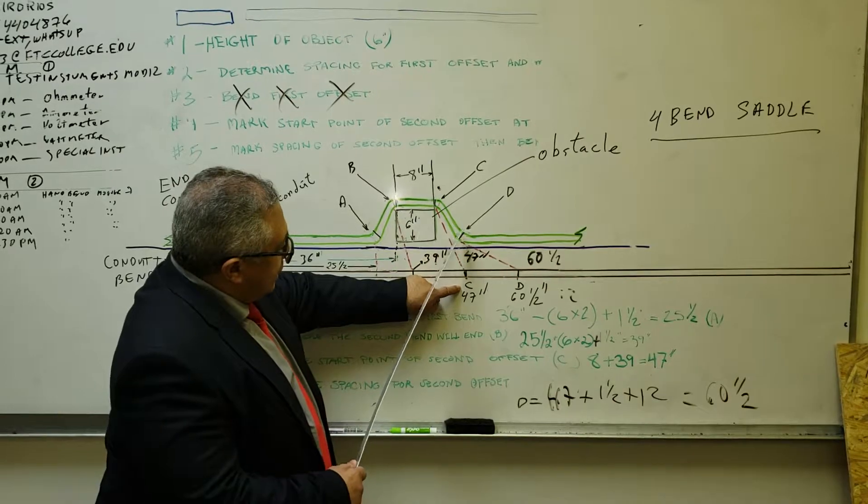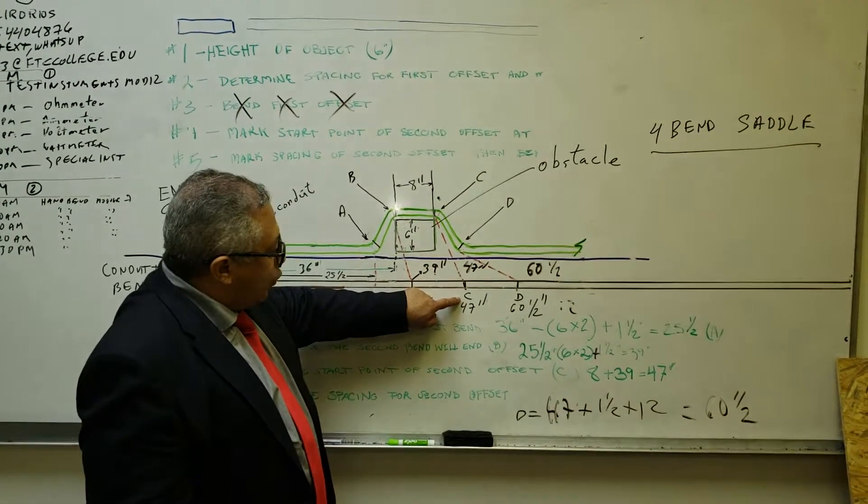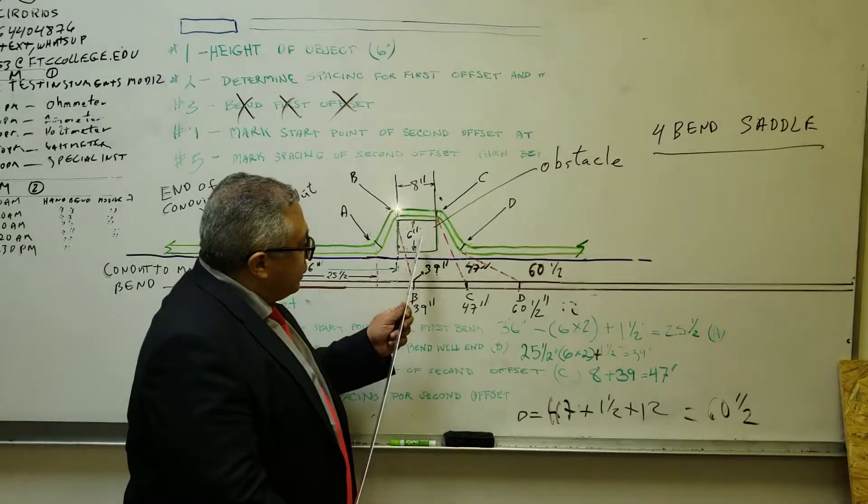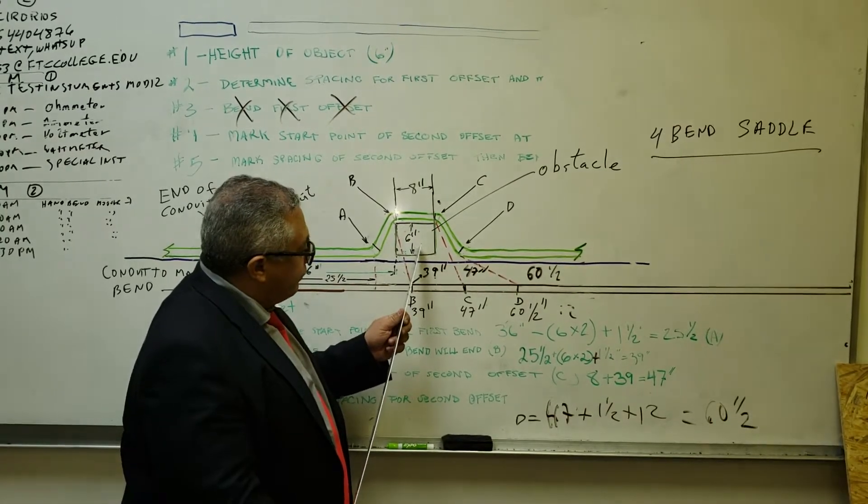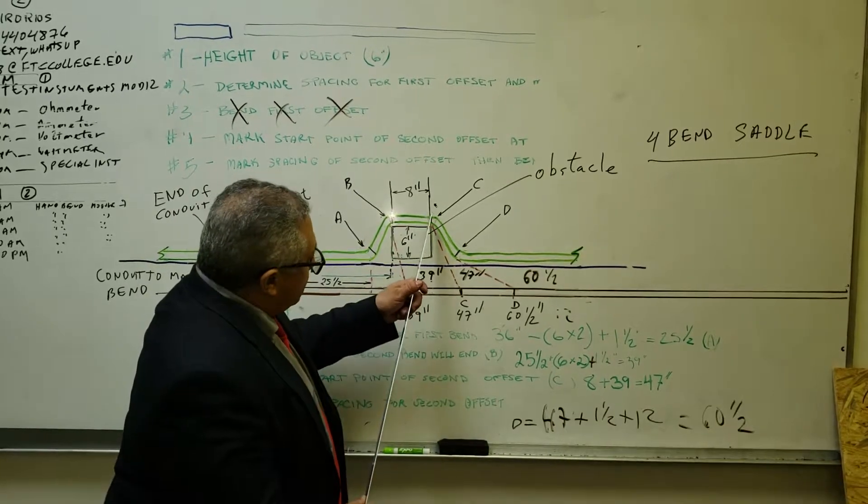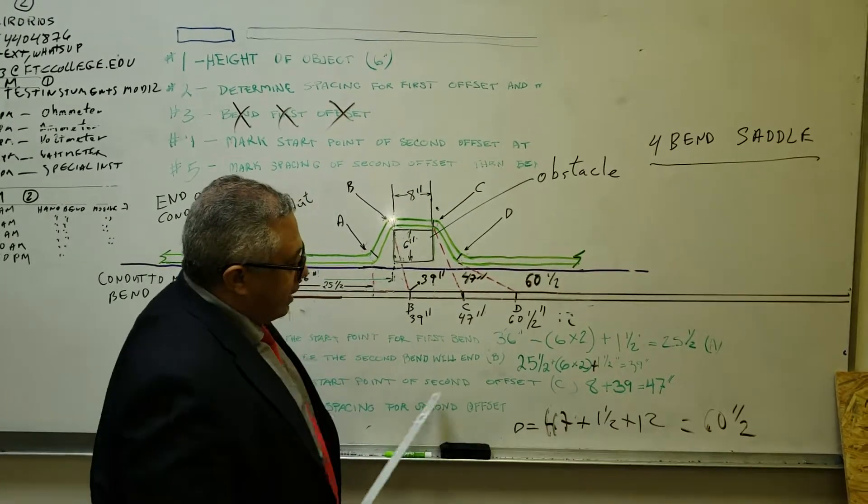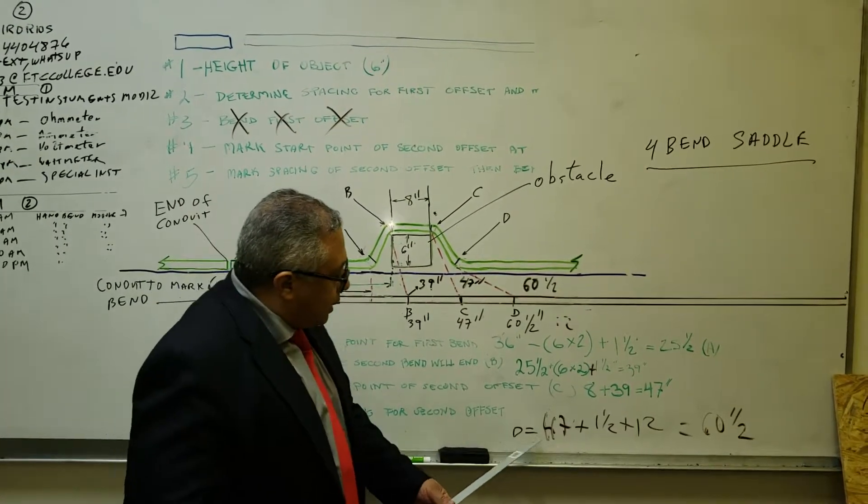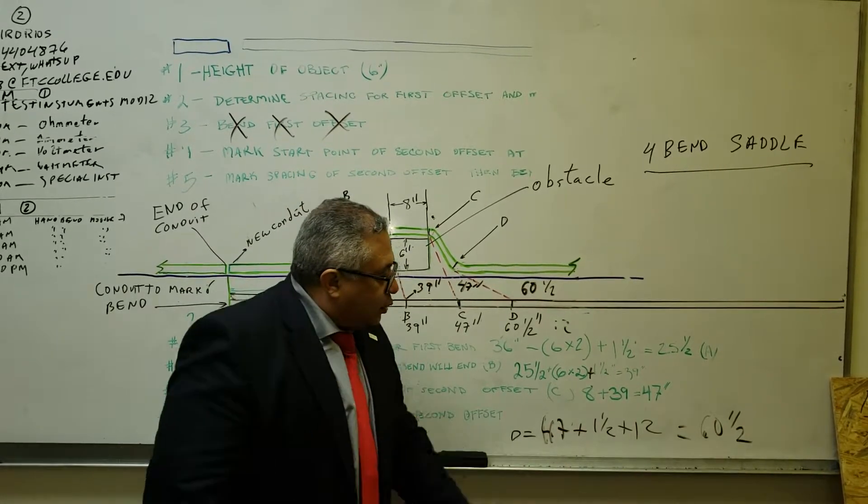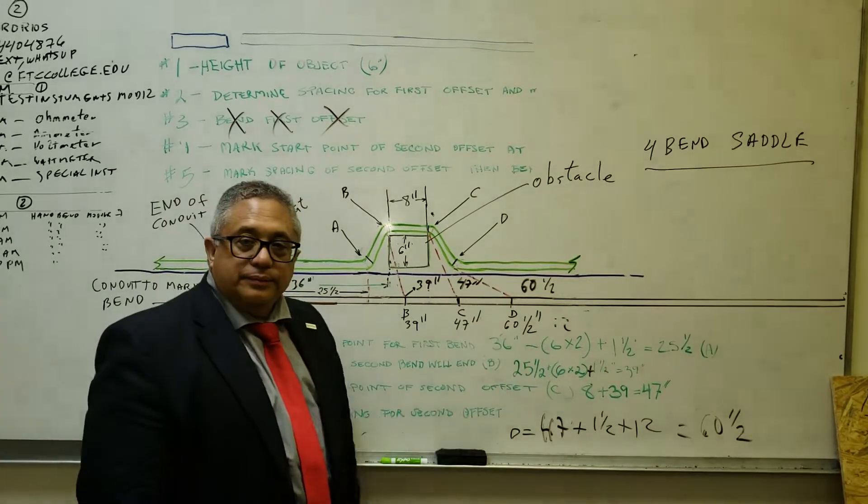Now we need to mark the next point we need to bend the conduit. How do we find that out? It's the multiplier times the height, which is 6 times 2, is 12. 12 plus the shrink value, which is 1 inch and a half. That's how we get 47 plus 1 inch and a half plus 12. That's how we get 60 inches and a half, and then we go ahead and mark the pipe.